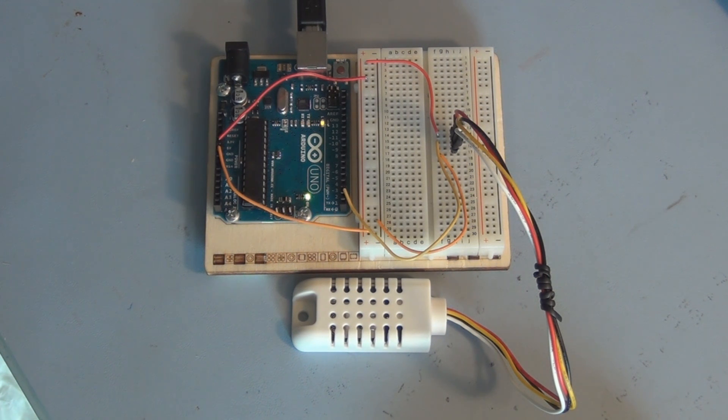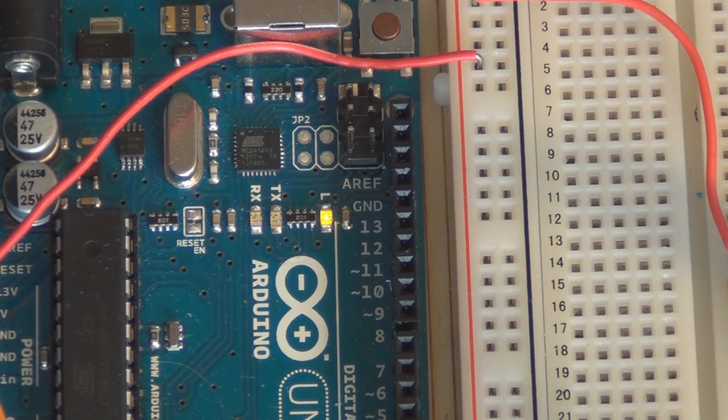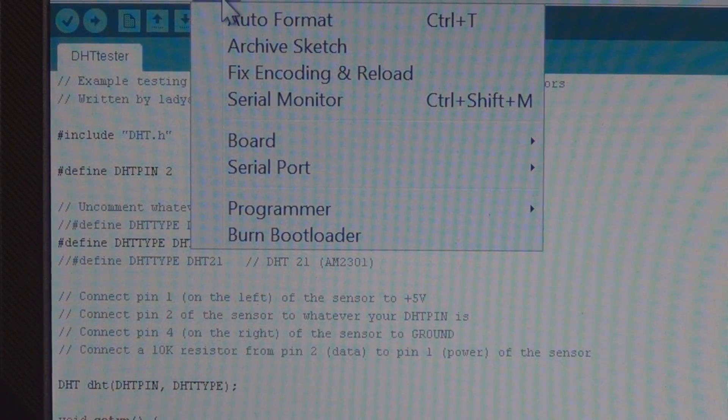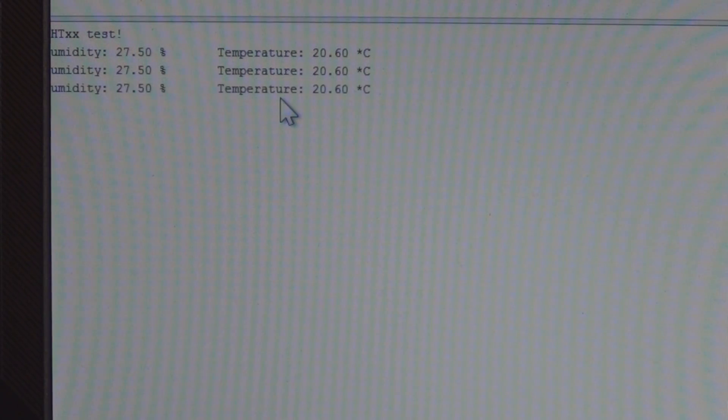So it looks like it's constantly transmitting data. Got the TX light flashing. So let's open up the monitor program and take a look at the data. Okay we'll open up the serial monitor program. There we go.